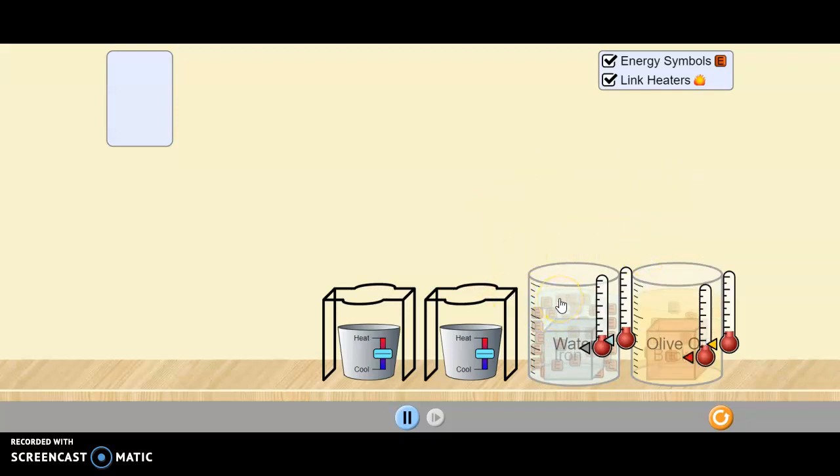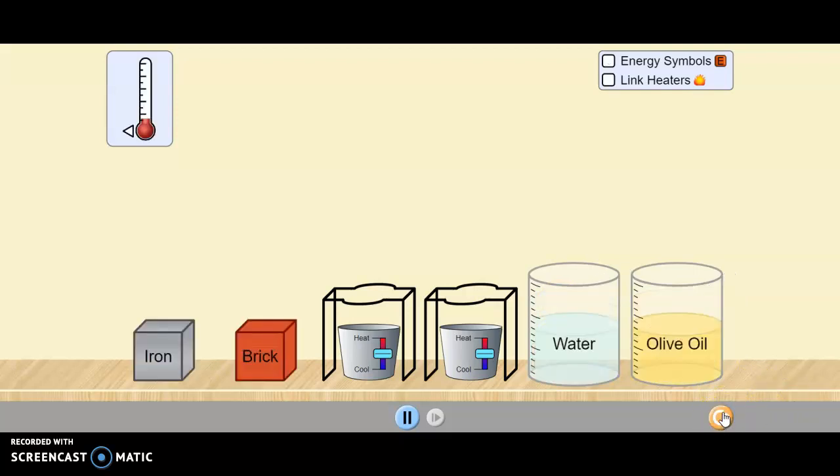So what I want you to do in this explore activity is to have fun. Heat things up, cool things down, notice the energy symbols, notice the thermometer, the temperature rising and falling. And every time you want to reset you just click this button here and you're back to the beginning. But make sure every time you reset that you click those energy symbols, you link the heaters, and you put a thermometer on each one. Go have fun!